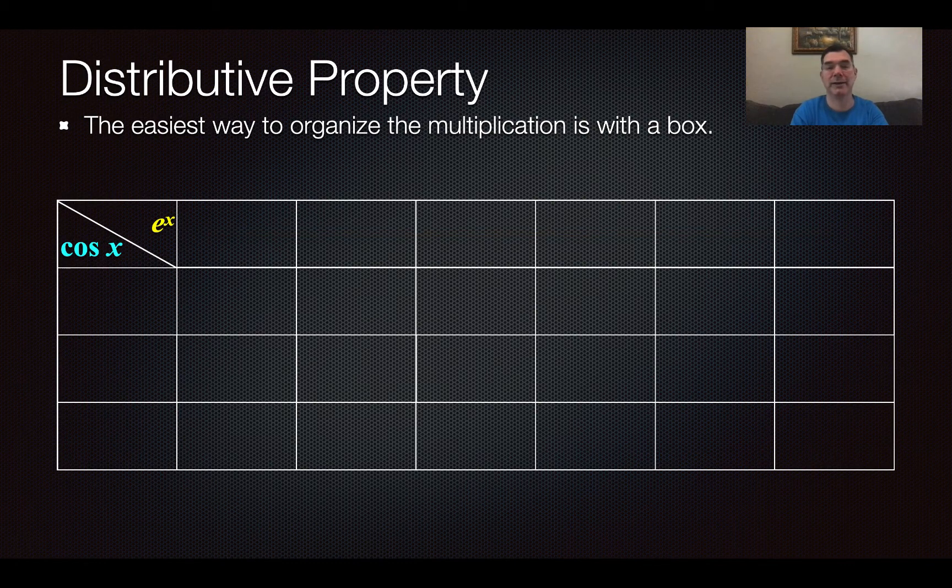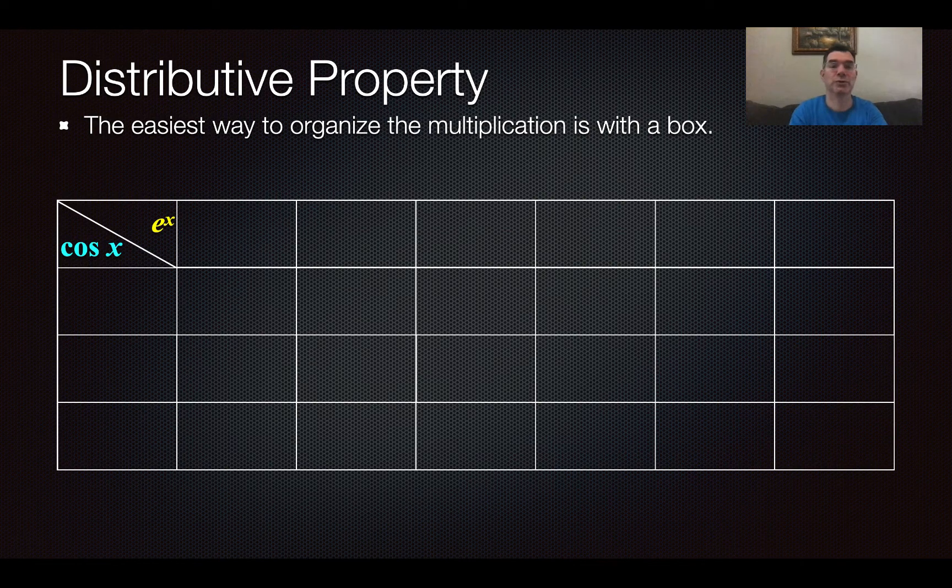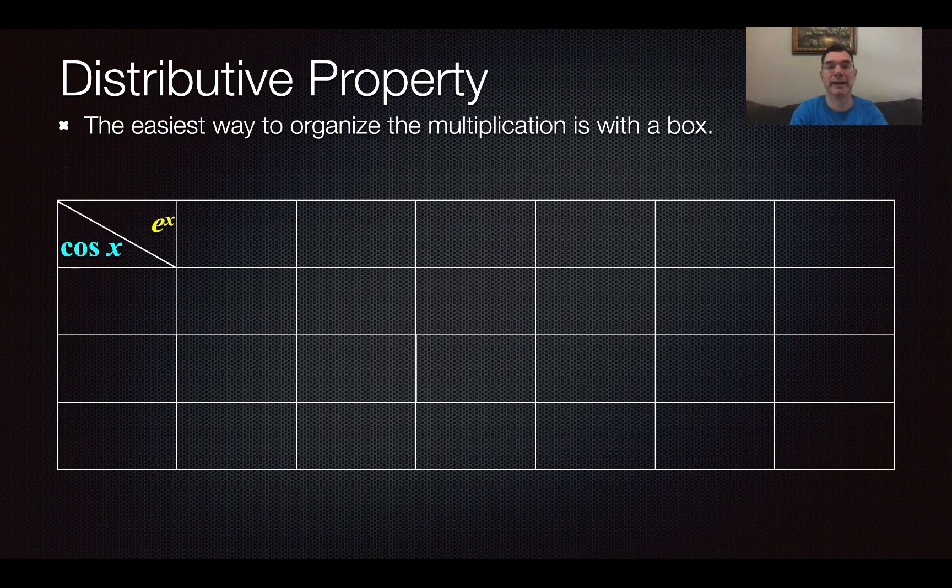I know I've got enough terms, but if I didn't, I would add columns or rows if I needed more terms for either of those Maclaurin series to get the right answer.